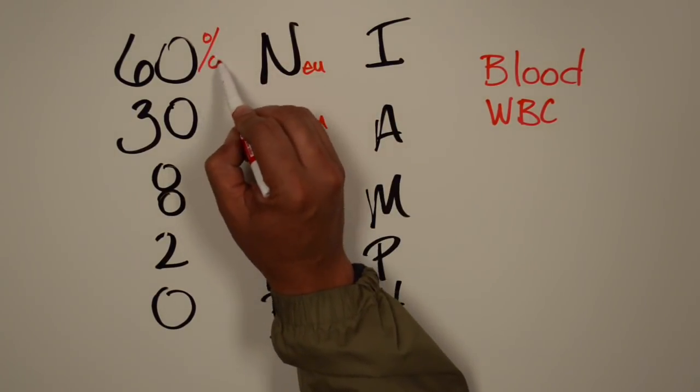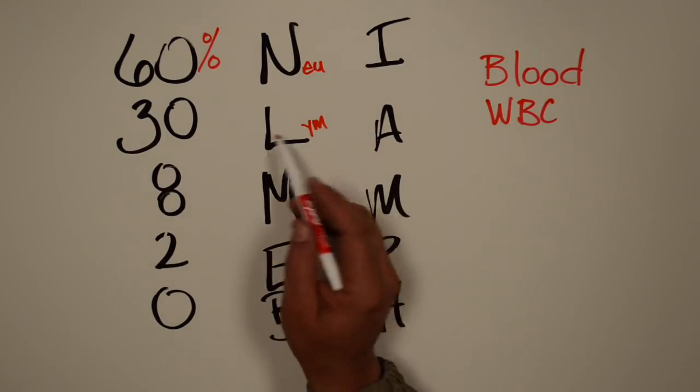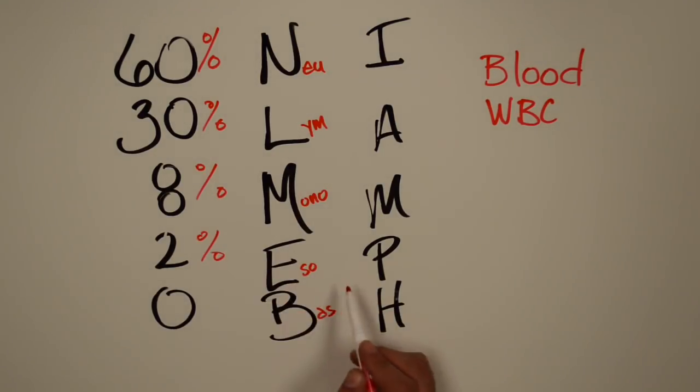Neutrophils are going to make up about 60% of your white blood cells in a blood count. These should be about 30%, these should be about 8%, these should be about 2%, and really, you shouldn't be finding these basophils in blood.